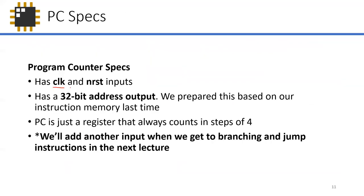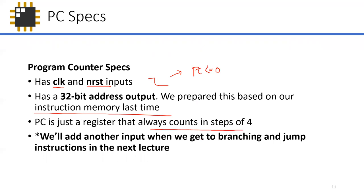The program counter spec is simple. It has a clock and an active-low nReset input — when nReset is low, it resets the program counter to zero. It has a 32-bit address output because all addresses are 32 bits. PC is just a register that always counts in steps of four. Later, we'll add another input for branching and jumping, where we modify the program counter to a different value — we'll discuss this next lecture.